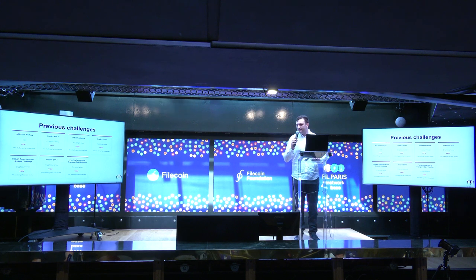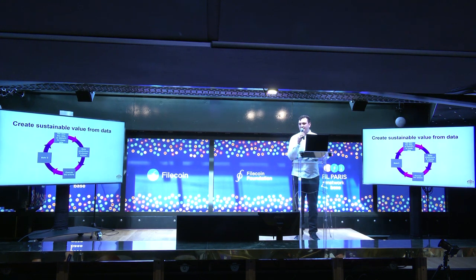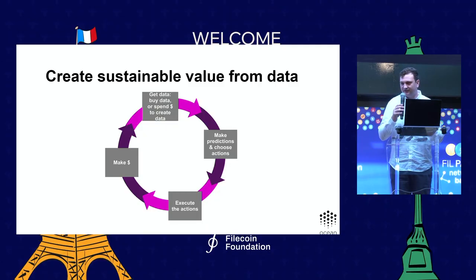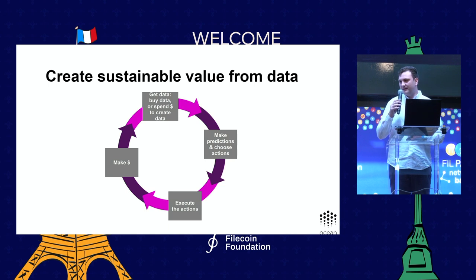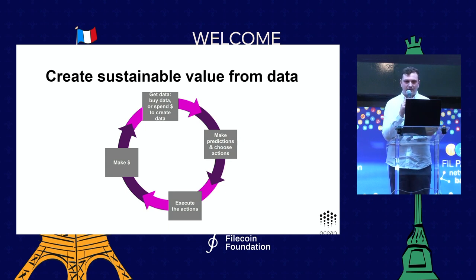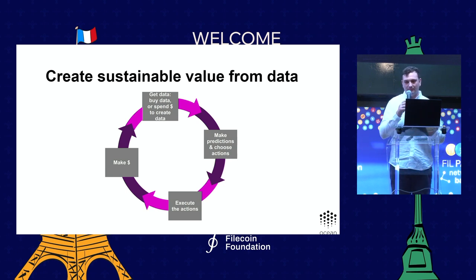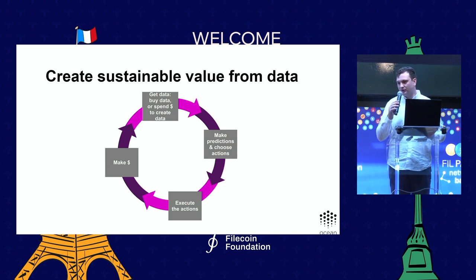By tokenizing access control and having on-chain revenue tied to these data assets, it really helps kick-start the full data creation loop. As opposed to today where you need the full end-to-end process yourself — getting data, curating, cleaning, building a model, then an application — with crypto you can enforce royalties so upstream contributors take part in downstream value. This creates a sustainable loop: access to data creates more powerful models, which create applications leading to greater profits, which get reinvested into better data, better models, and better applications — helping to create a sustainable open data economy.